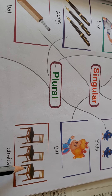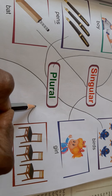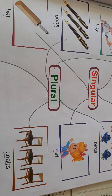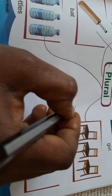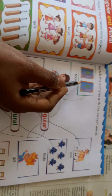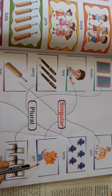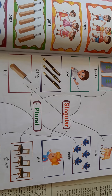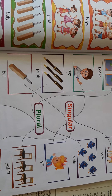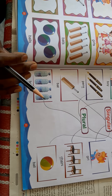Chairs — we have two chairs, so that is plural form. Next, ball — one ball is singular. This picture matches singular form. This picture matches plural form. Page number 20 and 21 complete. Video complete.